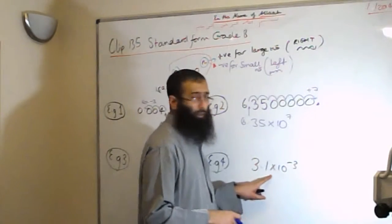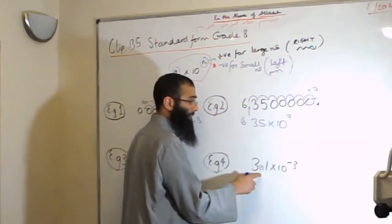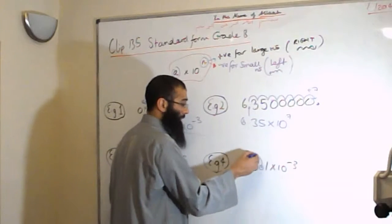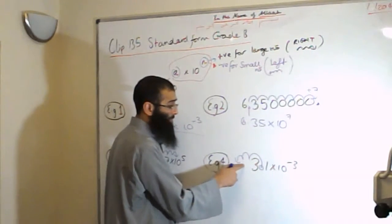Example number 4. 3.1 times by 10 to the minus 3. So we have this decimal point here. The minus 3 indicates we have to move the decimal point to the left, 3 places: 1, 2, 3. That's empty jumps. It's not a number there in the original question.